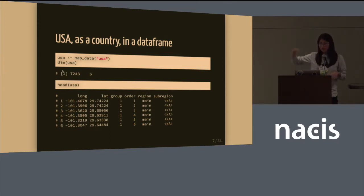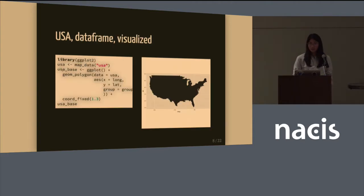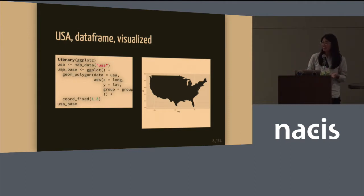At the very bottom we see latitudes, longitudes, groups, and orders. The group and order columns are important because they tell the plotting engine which order to plot all our latitudes and longitudes in. And then we get something like the default ggplot map on the right, which is very rectangular and a color scheme I'm not really a fan of — so I'm going to change first the color and then the projection.